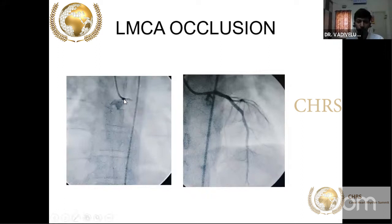On angiography, only the left main stump was visible — occluded, unable to give rise to LAD or LCx. This is a proximal or mid left main coronary artery occlusion. After stenting, the patient was managed successfully.